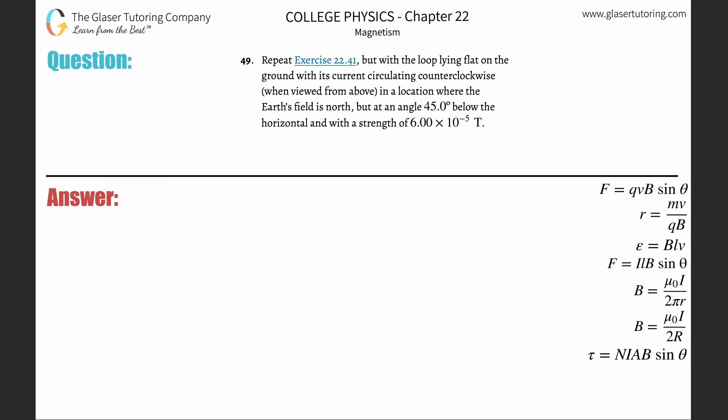Number 49: repeat exercise 22.48, but with the loop lying flat on the ground with its current circulating counterclockwise when viewed from above, in a location where the Earth's field is north but at an angle 45 degrees below the horizontal with a strength of 6 times 10 to the minus fifth Tesla.